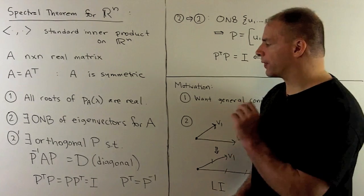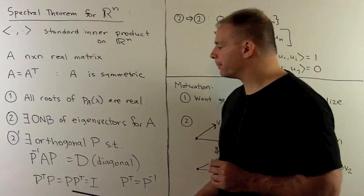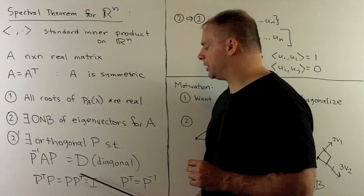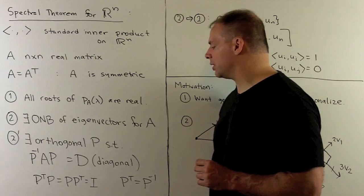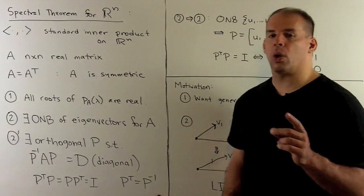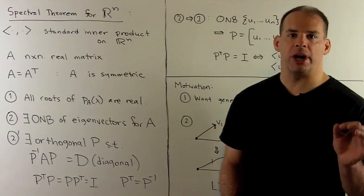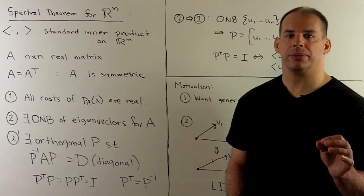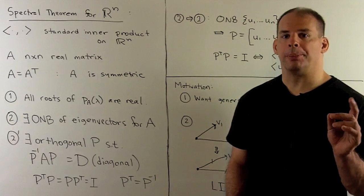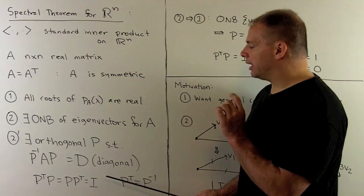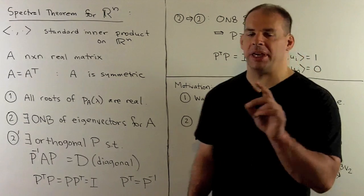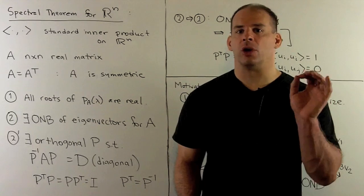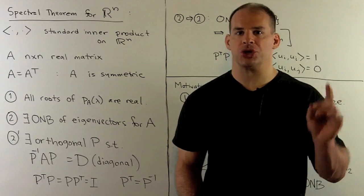Recall, orthogonal means P transpose times P equals P P transpose equals the identity matrix, or P transpose equals P inverse. The idea here: if we apply P to our vector space, then the inner product will be preserved.